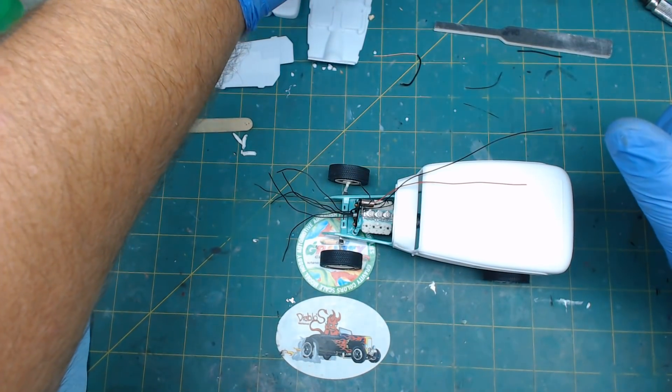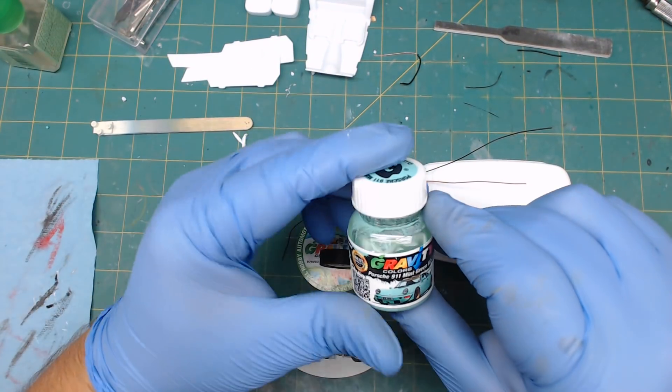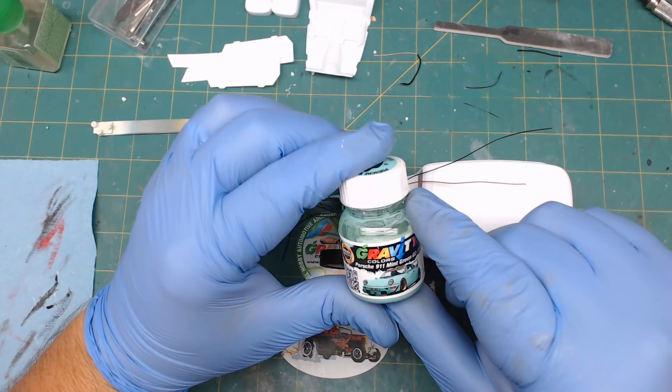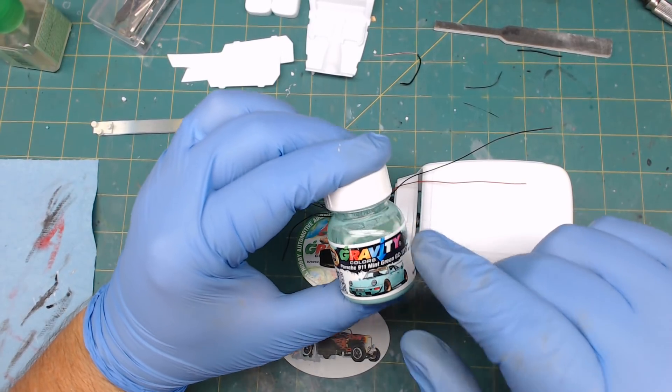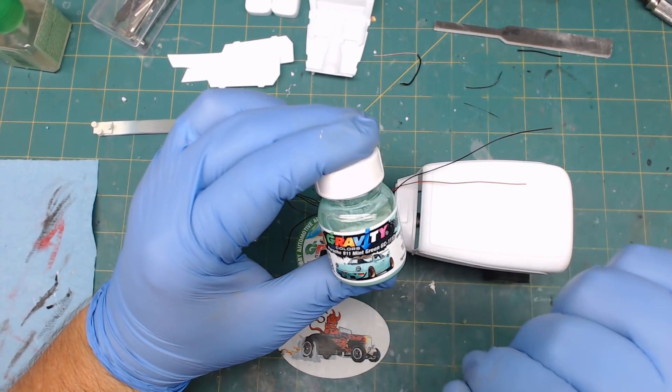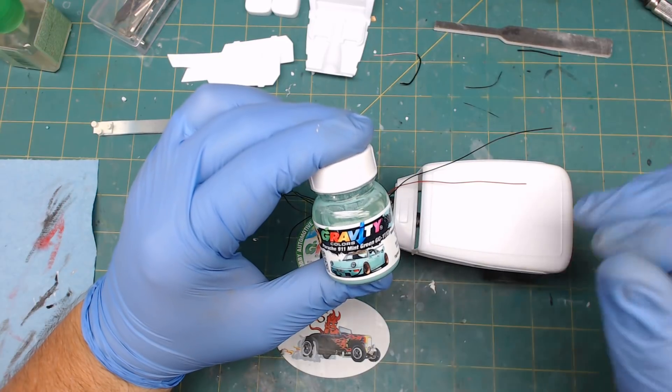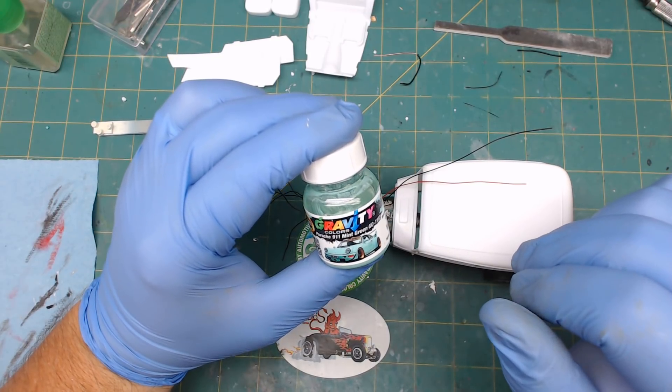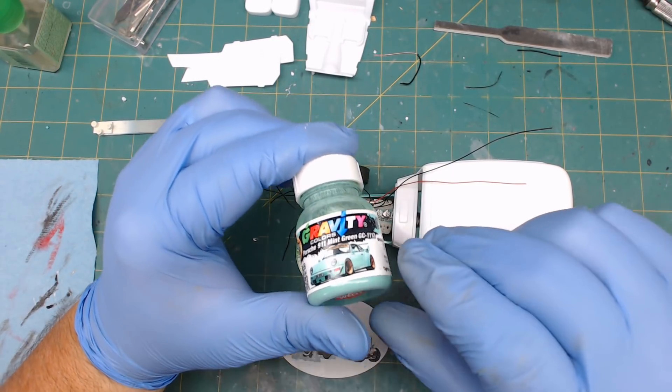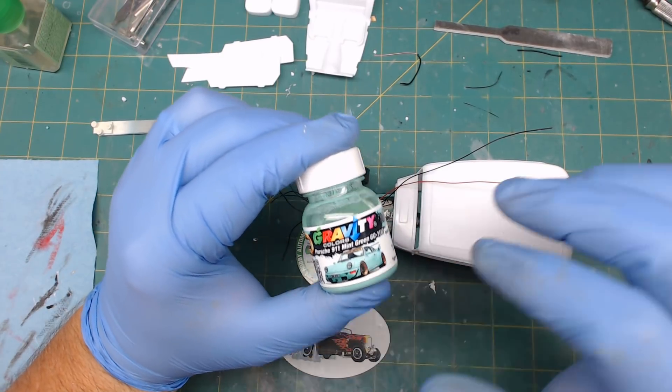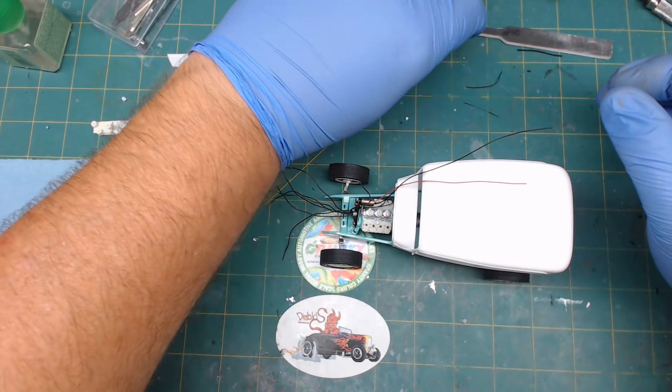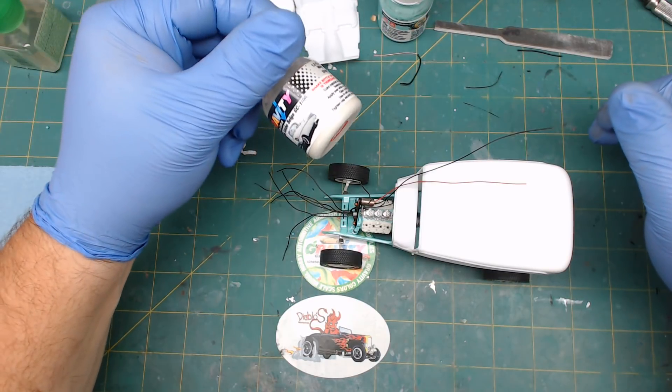You can see we switched the paint over. We went from that black cherry stuff, we went over to this Porsche 911 mint green. This is a bottle I picked up randomly when I made my first order of Gravity Paints. So I just went to that and still doing with the cream, the same cream color.